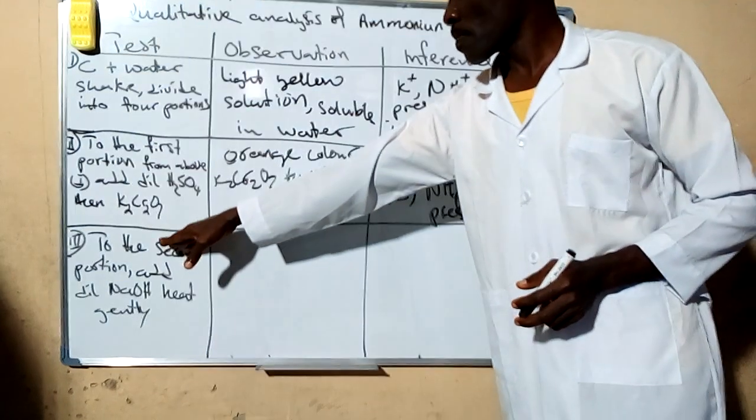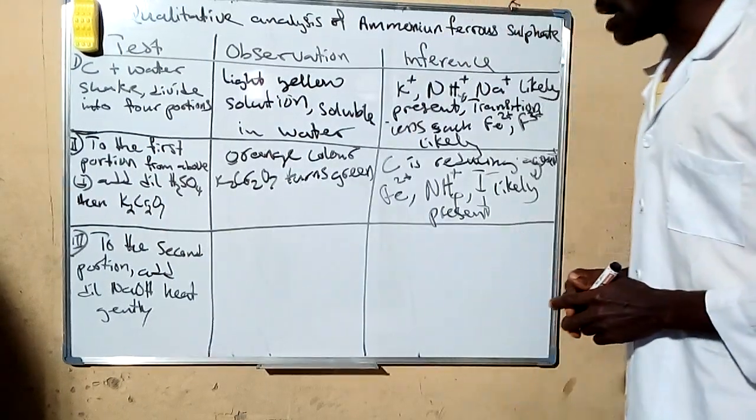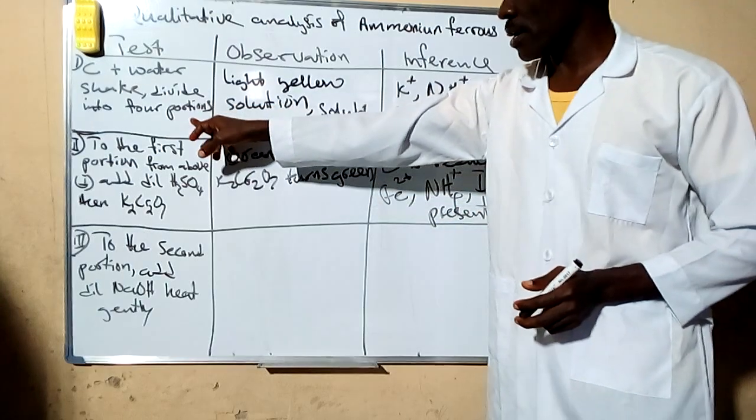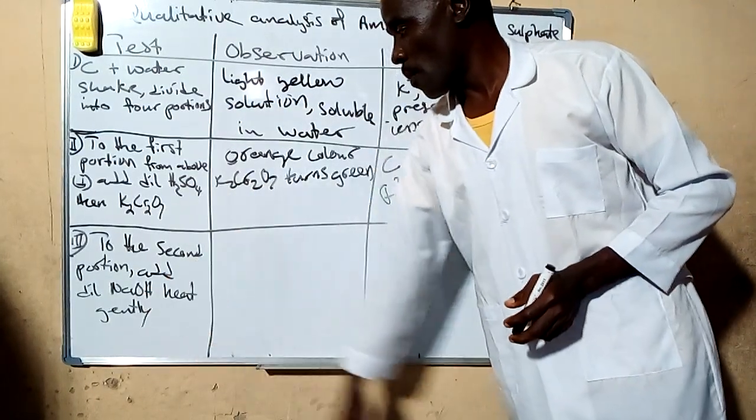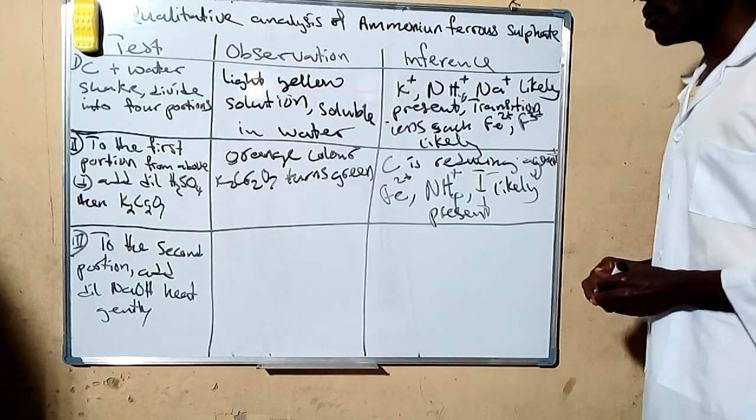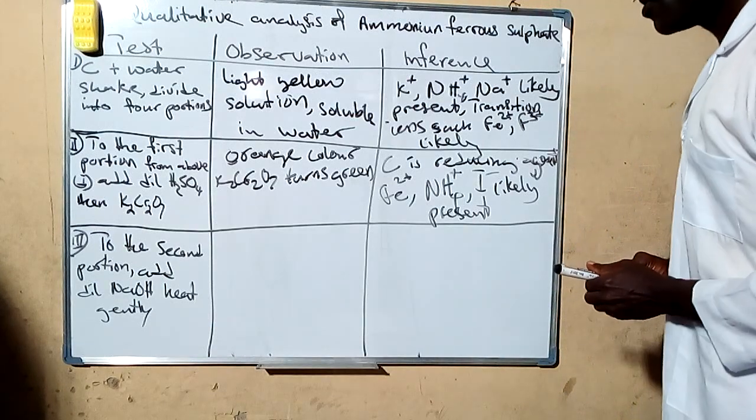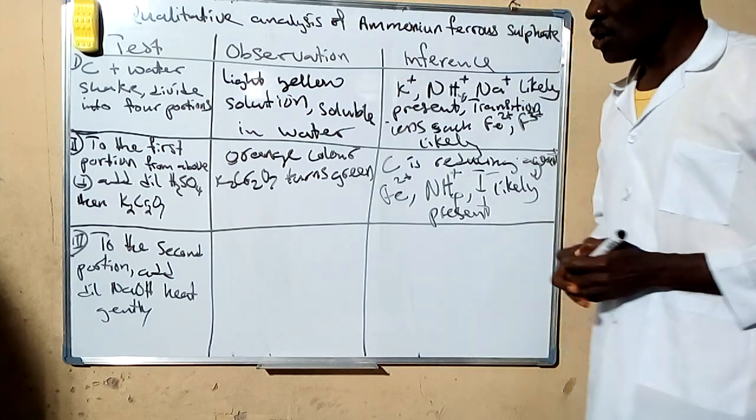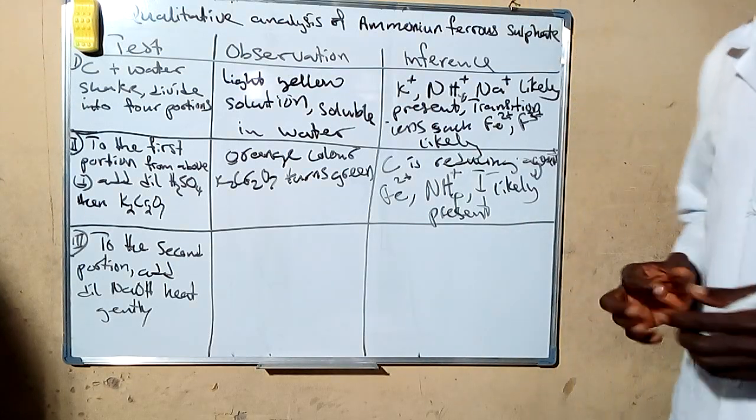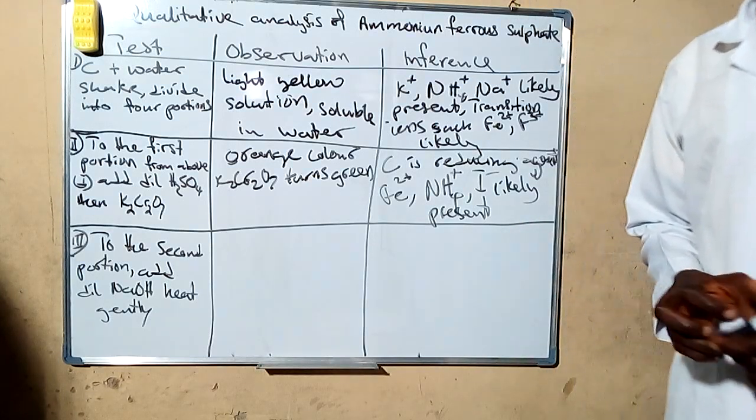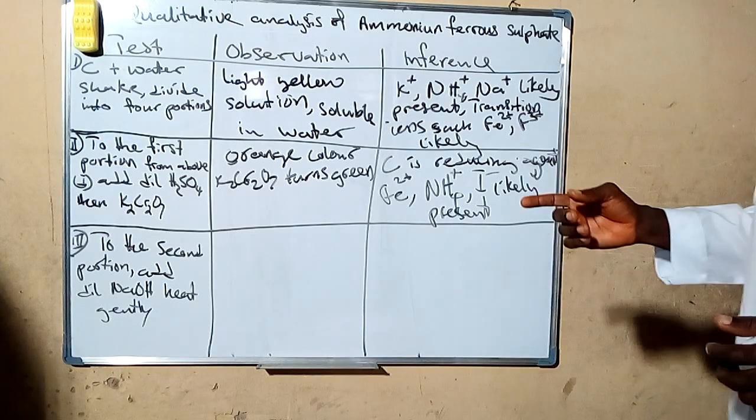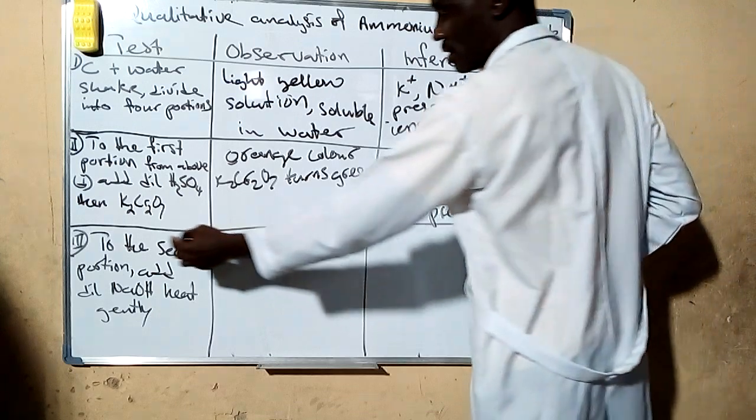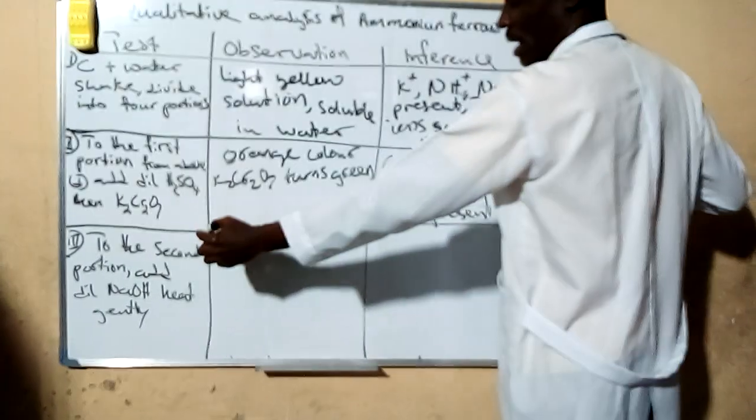The next one, you add the second portion from what we got from here, you add sodium hydroxide and then you heat gently. What I want to pass across to you here is that all ammonium salts, when heated with base or alkaline, liberate ammonia.